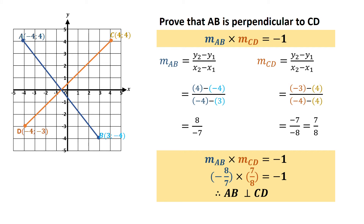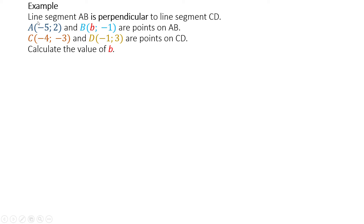So they could ask you to prove that they're perpendicular. Another way they could ask it is they could tell you that they're perpendicular and ask you to prove something else. So have a look at this example — they say line segment AB is perpendicular to line segment CD. This comes from your textbook; it's D2 in exercise 3. They already tell you that they're perpendicular, so you should already be thinking about that formula. They give you A and half of B — there's an unknown there. They give you C and D, and ask you to calculate the value of B.